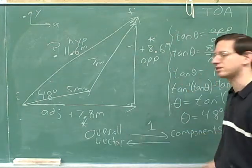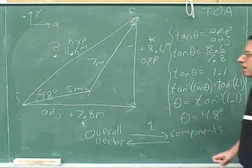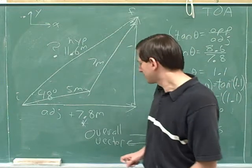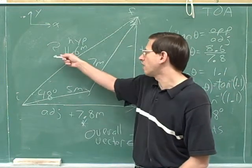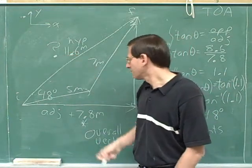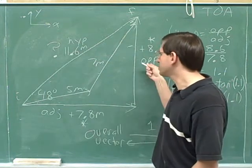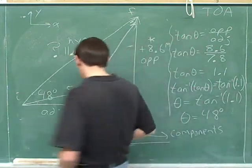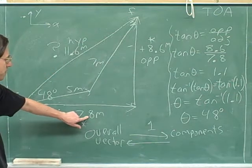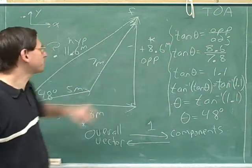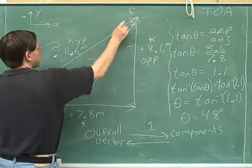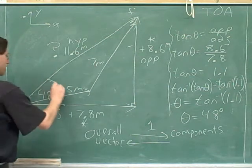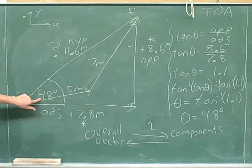But again, what we really cared about was to find our overall resultant displacement vector. So we had to take the components and build those back up to the overall vector. We had to say that if we'd gone 7.8 meters to the right and 8.6 meters up, what's our overall displacement? What's the hypotenuse of this triangle? And we also wanted to figure out what our overall angle was over here.